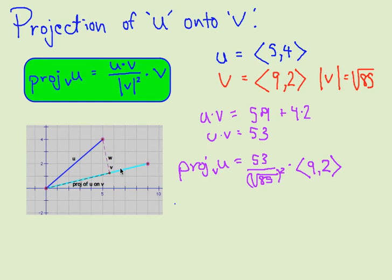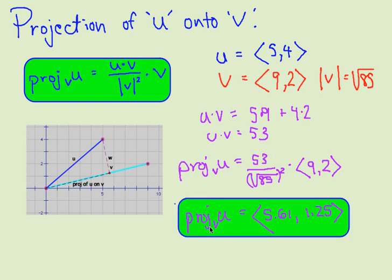So as I set this up, I can see that u is 5, 4 as our vector. v is 9, 2. We can find the magnitude of v. 9 squared plus 4 squared is 85. It's the square root. Again, we find our dot product, multiply our x's, multiply our y's. We get a dot product of 53. We plug everything into the formula, and we get 5.61, which makes sense. That's about 5.61. And y is 1.25.